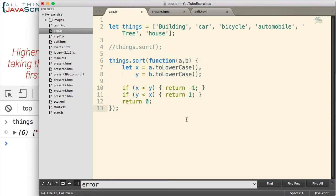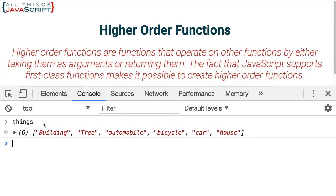Now, let's save this and see how our sort works. Refresh and then I'm going to display things again. And notice our sort is correct now. Automobile, bicycle, building, car, house, and tree. So, applying the concept of higher order functions using the sort method.